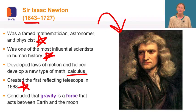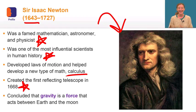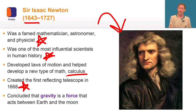His most famous accomplishment was his work on gravity. According to legend, Newton saw an apple fall from a tree. He knew that an object would not move unless something pushed or pulled it to move it. Newton asked himself, what causes the apple to fall from the tree?